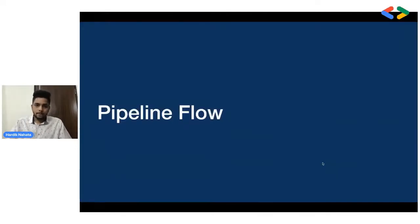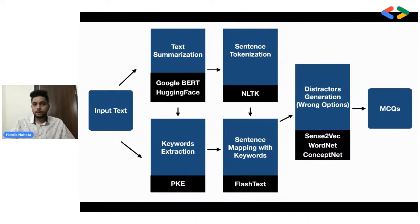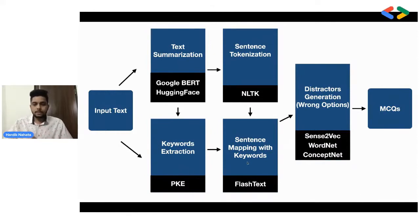Let me take you through the pipeline flow. We start with an input block of text, which is sent to text summarization and keyword extraction. The boxes in blue show what activity is happening on the input, and the boxes in black show what library or model is being used. Text summarization happens with the Google BERT model served by Hugging Face, and keyword extraction happens with PKE — Python Keyphrase Extraction. The summarized text is then sent for sentence tokenization to extract sentences, and the keywords are sent for sentence mapping.